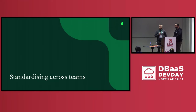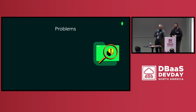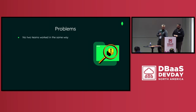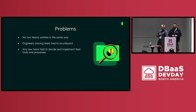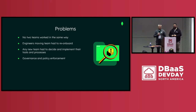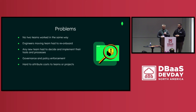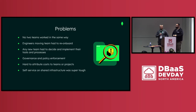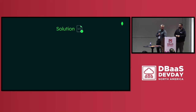With these improvements in place, the team was running like a well-oiled machine, but the problems were getting worse with service across all of the other engineering teams at the company. Alignment across teams was becoming a hot and often heated topic of conversation. No two teams were working in the same way. Engineers moving between teams had to effectively re-onboard, and this also limited collaboration. Any new team had to decide and implement their tools and processes, reinventing the wheel and costing them valuable time. Governance and policy enforcement were also struggling. Finance weren't happy either — it was hard to attribute cost to teams or projects. And self-service was suffering, with little shared infrastructure set up as self-service.